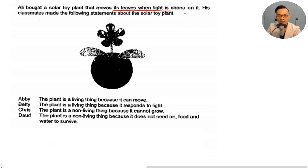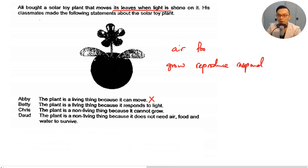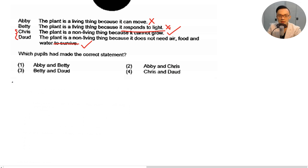Ali bought a solar toy plant that moves its leaves when light is shown on it. Statement: the plant is a living thing because it can move — not correct, because living things must also reproduce, respond to changes, grow, and need air, food, and water. The plant is a non-living thing because it cannot grow — correct. The plant is a non-living thing because it does not need air, food, and water — correct. So C and D are the correct statements, and the answer is number four.